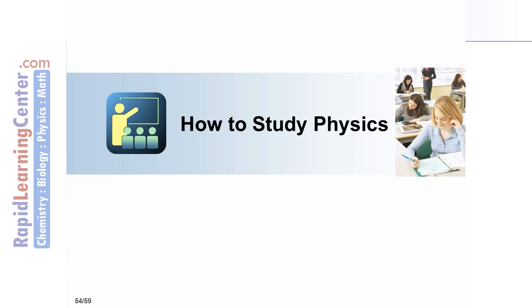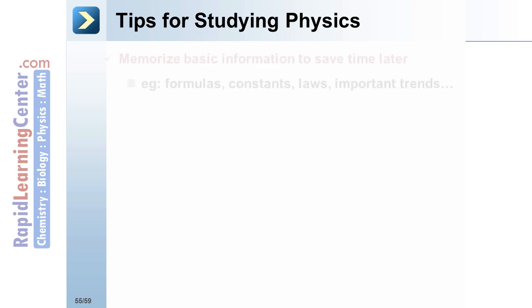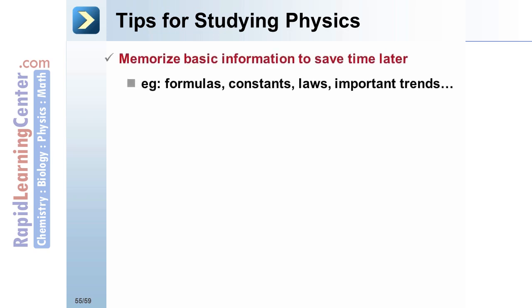How to study physics: Tips for studying physics. Memorize basic information to save time and trouble later. You might have access to a formula sheet or card; however, you may need to memorize information like formulas and laws.